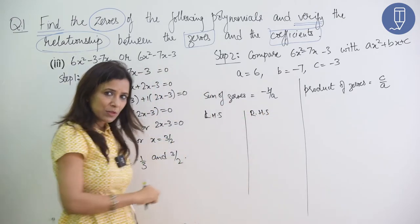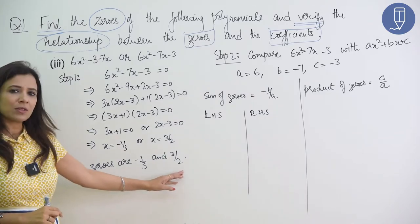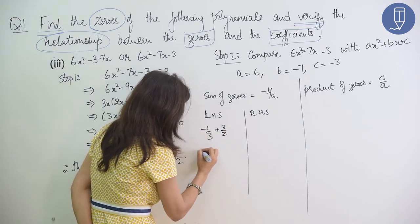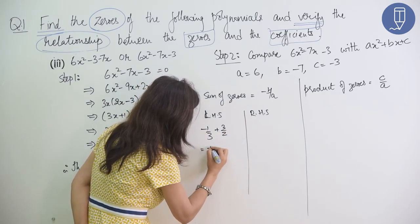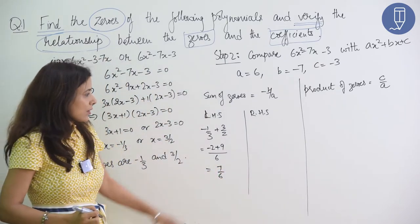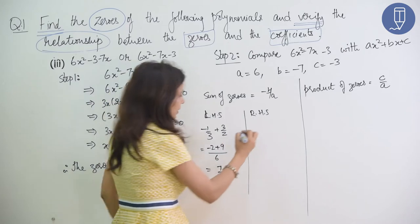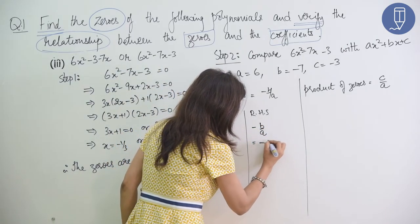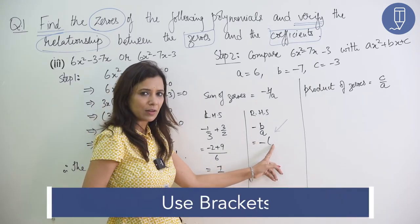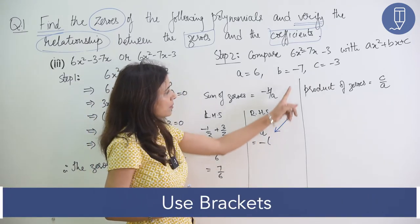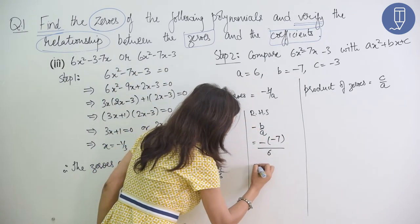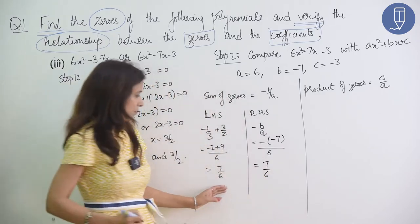Left hand side is sum of zeros. Zeros are minus 1 by 3 and 3 by 2. So, minus 1 by 3 plus 3 by 2. So, LCM 6. Minus 2 plus 9. Here, we got 7 by 6. Right hand side is minus b by a. So, minus b by a. Equal to minus. I told you before. Put minus and definitely put bracket. Okay? Now in bracket we'll put b's value, minus 7, upon a. a's value is 6. So it became 7 by 6. Same came, right?